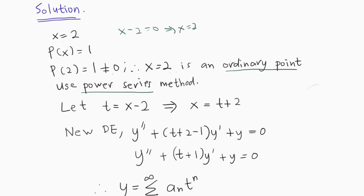Since x is not at the origin, we let t = x - 2, where x = t + 2. The new DE becomes y'' + (t + 2 - 1)y' + y = 0. Simplifying, we have y'' + (t + 1)y' + y = 0 as our new DE.